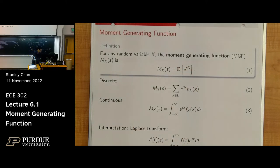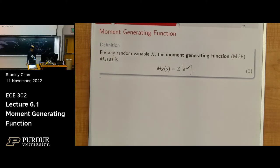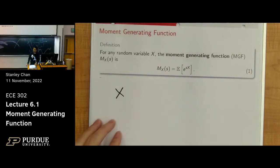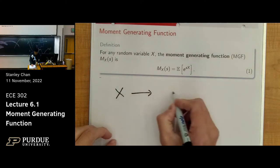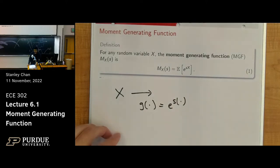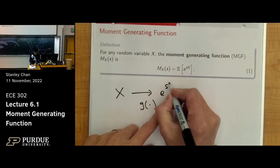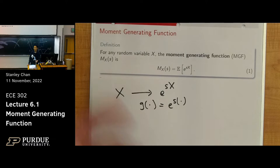Let's define the moment generating function of a random variable X as the expected value of e to the power SX. This makes no sense at all at first glance. You have a random variable X, there's a mapping G: I take your X and apply G — which is e to the power S times X. Then I take the expected value of this transformation. S is just a number — think of it like the frequency variable in a Fourier transform. It's the variable in the other space.